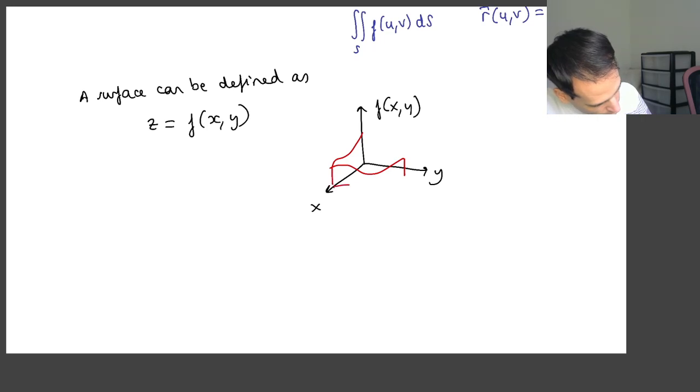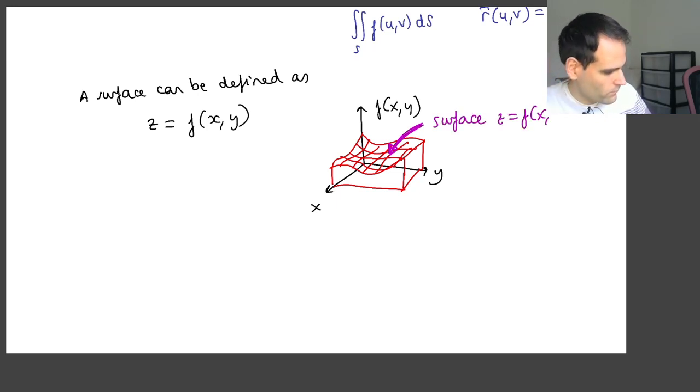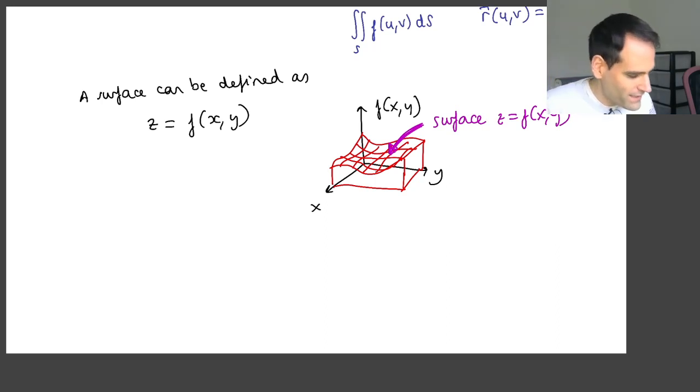This is a very bad drawing, but yeah, so you know that this surface here can be written as a function of x and y, right? So what if I ask you to calculate some surface integral on a surface like that defined in this way? How do you obtain the parametrized form of this surface?